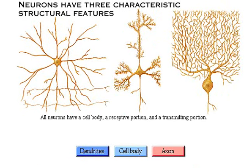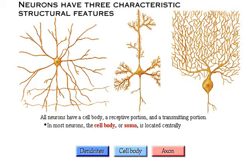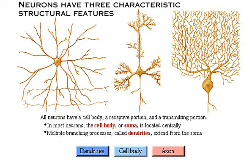All neurons have three characteristic structural features: a cell body, a receptive portion, and a transmitting portion. In most neurons, the cell body, or soma, is located centrally. Multiple branching processes, called dendrites, extend from the soma, forming a structure resembling the branches of a tree. A thin single process, called the axon, also extends from the soma.